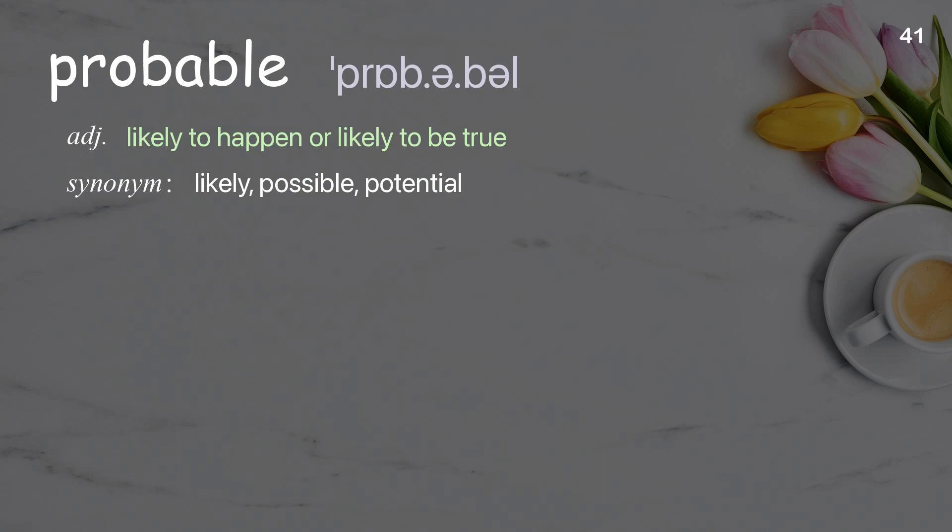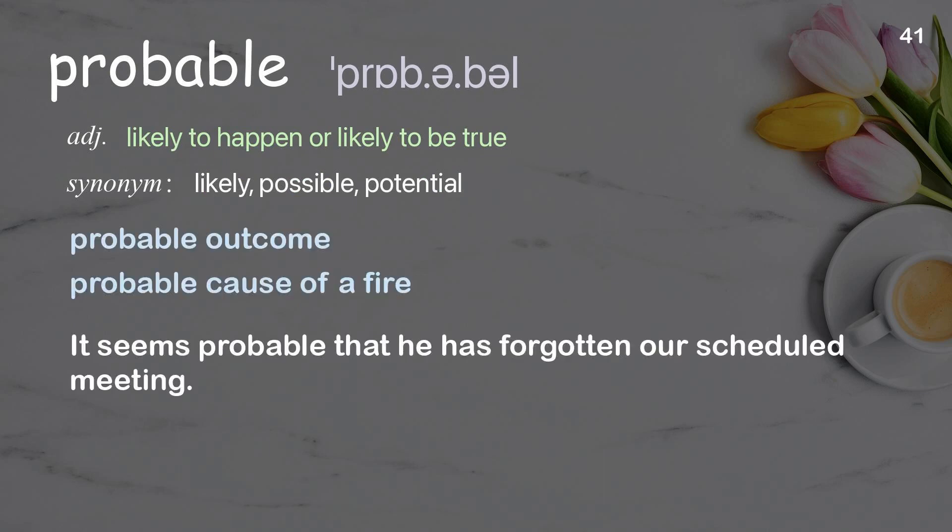Probable: likely to happen or likely to be true. Examples: probable outcome, probable cause of a fire. It seems probable that he has forgotten our scheduled meeting.